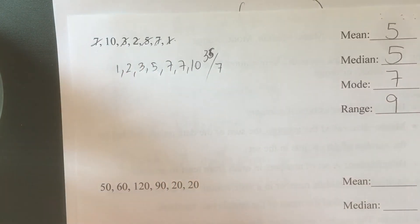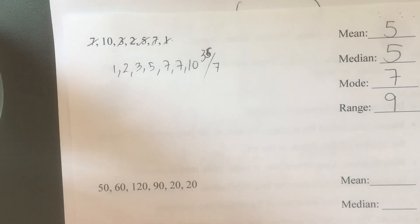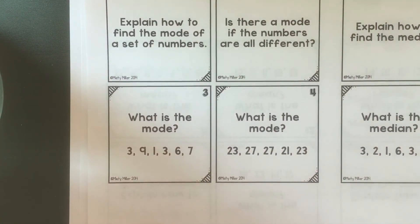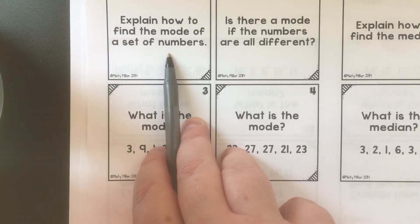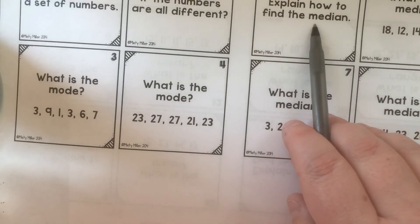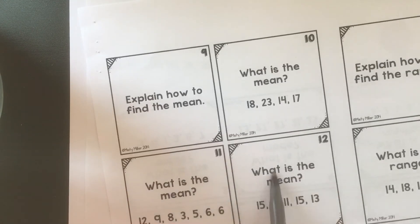Alright, so you have two more to practice on this page. And then for practice today I gave you some problems. You're not finding the same thing for everything. It says how do you find the mode - then there's three problems to find the mode. How do you find the median - three problems to find the median. How do you find the mean - three problems to practice that. How do you find the range - and three problems to practice that.